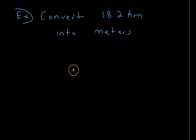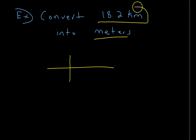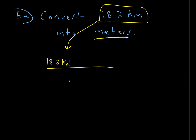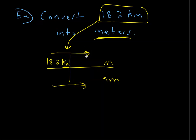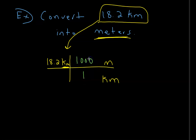The next problem says: convert 18.2 kilometers into meters. Start the picket fence with 18.2 kilometers — that's the unit you're given. The goal is meters, so meters goes on top. I don't want kilometers anymore, so kilometers goes on the bottom so they cancel when multiplied across.